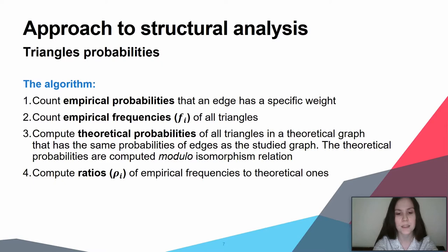To do so, we restrict ourselves to considering a theoretical graph that has the same probabilities of edges as the original one. We define the empirical probability that there is an edge with a specific weight between two randomly chosen vertices from a real graph. Also, we define the probability that there are no edges between two arbitrary vertices. We will specify triangles by their signature, meaning the sequence of weights of edges between any pair of vertices.